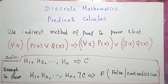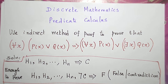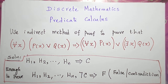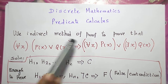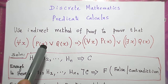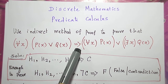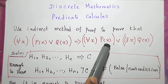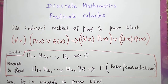Hello students, today let us see a problem from the topic predicate calculus in the subject discrete mathematics. Let me read the problem first. Use the indirect method of proof to prove that for all x, p(x) or q(x) implies for all x p(x) or there exists x q(x).